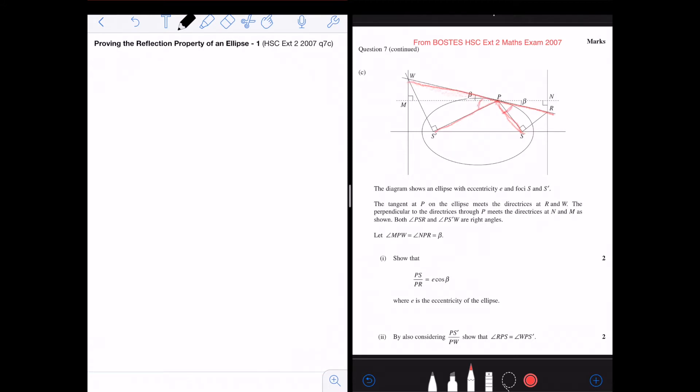So how do we prove these questions? We're starting from question one. Question one is proving PS over PR is equal to e cos beta. So how do we prove it? Okay, let's do it. So we know PS over PN is equal to e. This is by the definition of ellipse.